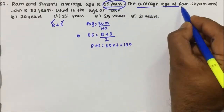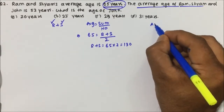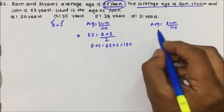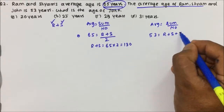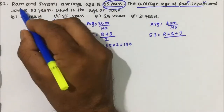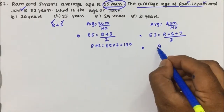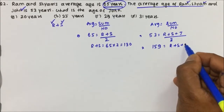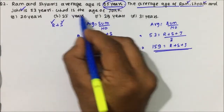Next: the average age of Ram, Siam, and John is 53 years. Average = sum / number. Average is 53, sum is Ram's age + Siam's age + John's age, divided by 3. So Ram + Siam + John = 53 × 3 = 159 years.